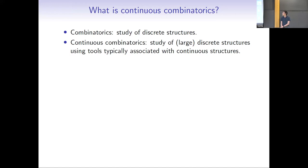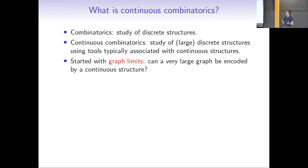This area first started kind of under the name of graph limits, but now that name is not exactly adequate because we have now produced limits that are not only for graphs. So we're trying to use the name continuous combinatorics. The question that started with graph limits is: if I have a very large graph, can I instead encode it by some sort of continuous structure? Continuous here doesn't really mean continuous in the sense of topology, but just that it is not discrete.